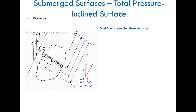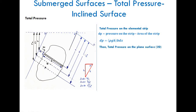We will find the total pressure on the elemental strip. Total pressure is not pressure — it is a pressure force. It equals the pressure on the strip multiplied by the area of the strip. The pressure on the strip is ρg·h, since h is the vertical distance from the top surface of the liquid, and the area is b·dx. So the total pressure on this elemental strip is dP = ρg·h·b·dx.